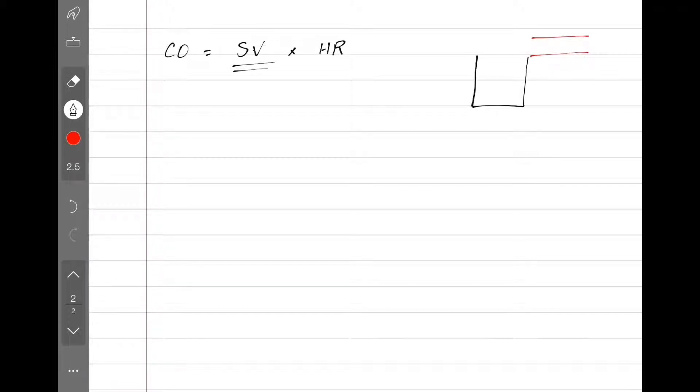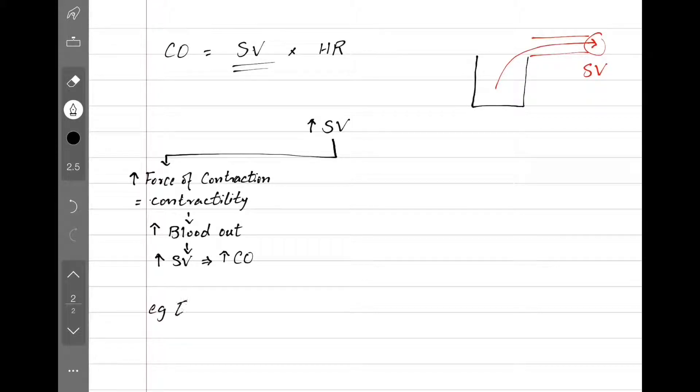First off, we look at stroke volume. Stroke volume is the amount of blood pumped out in a single heartbeat. Let's see how we can increase stroke volume. One way to do this is by increasing force of contraction, a fancy word for that is contractility. Doing so, we get more blood out of the heart with each beat, so stroke volume increases and cardiac output goes up. We see that during exercise and anxiety, both of which activate sympathetic system.